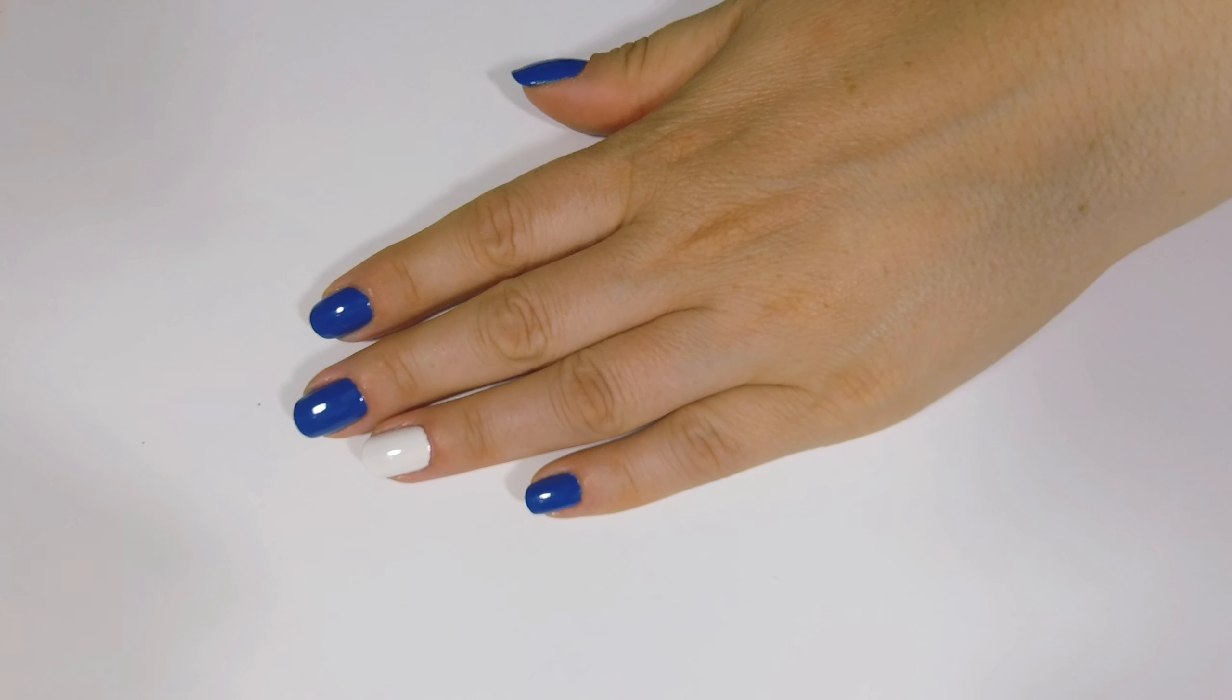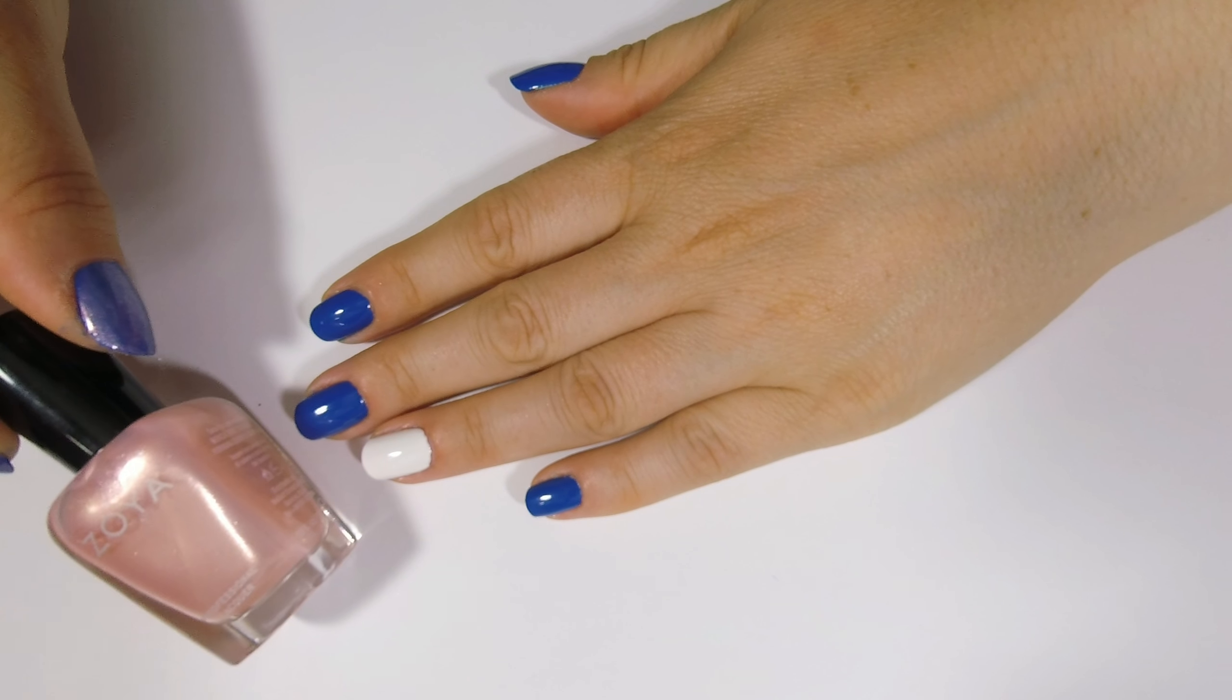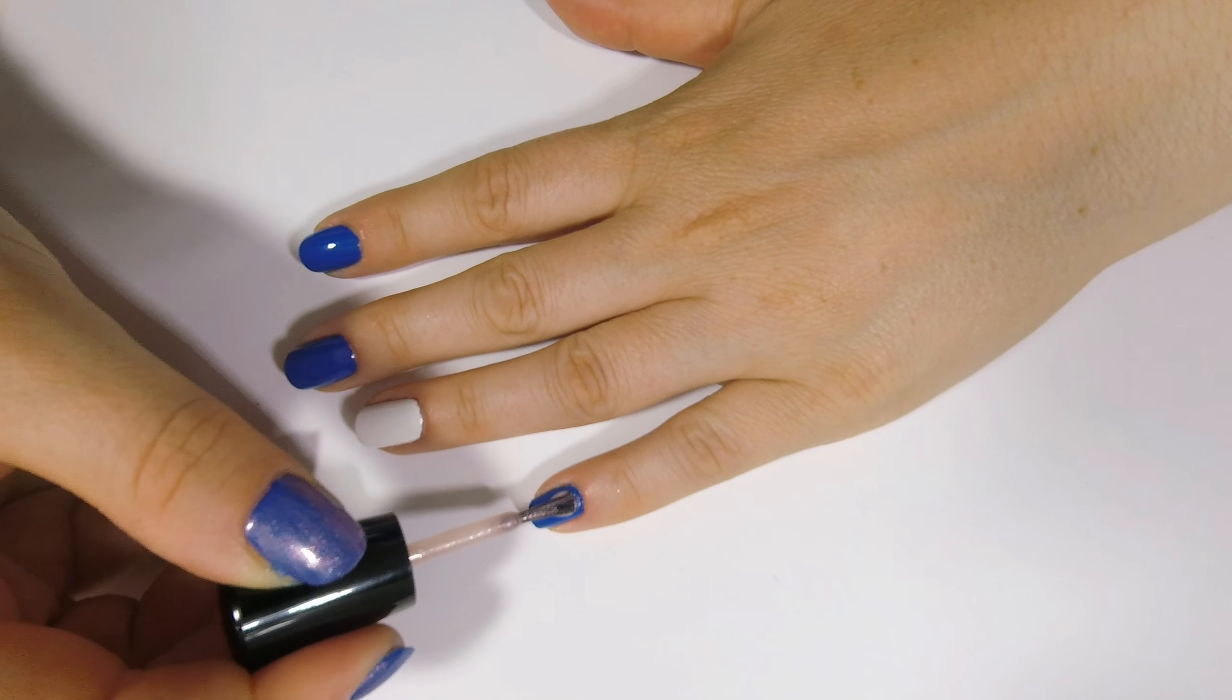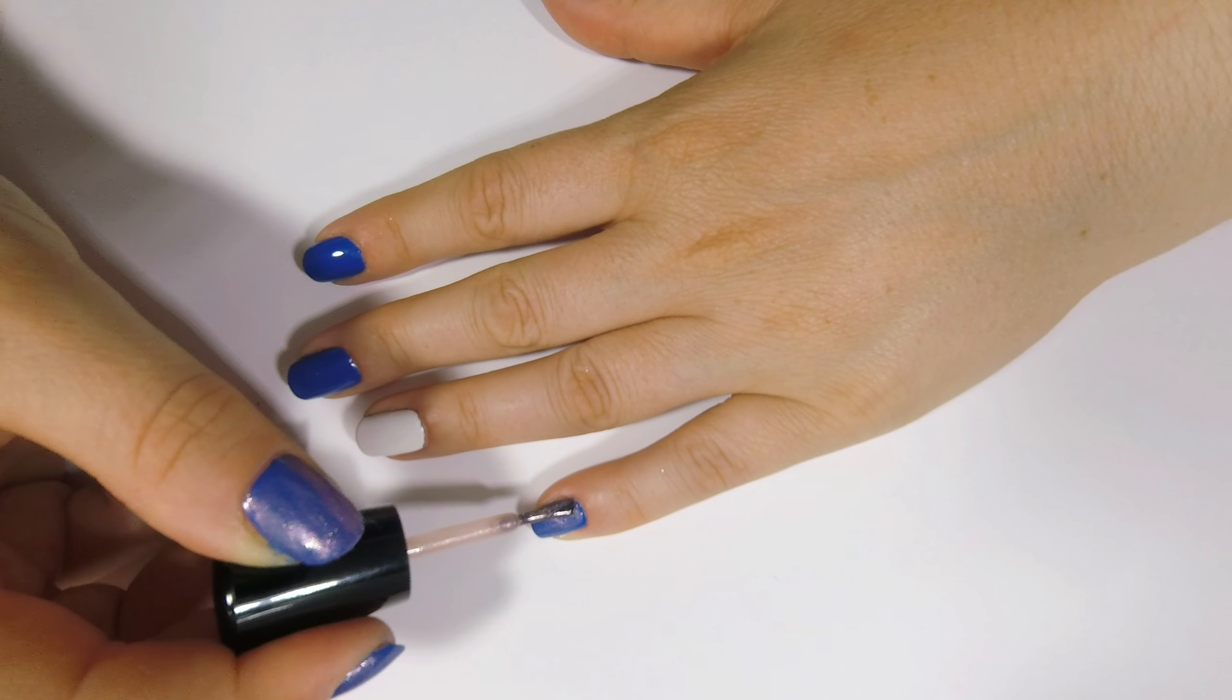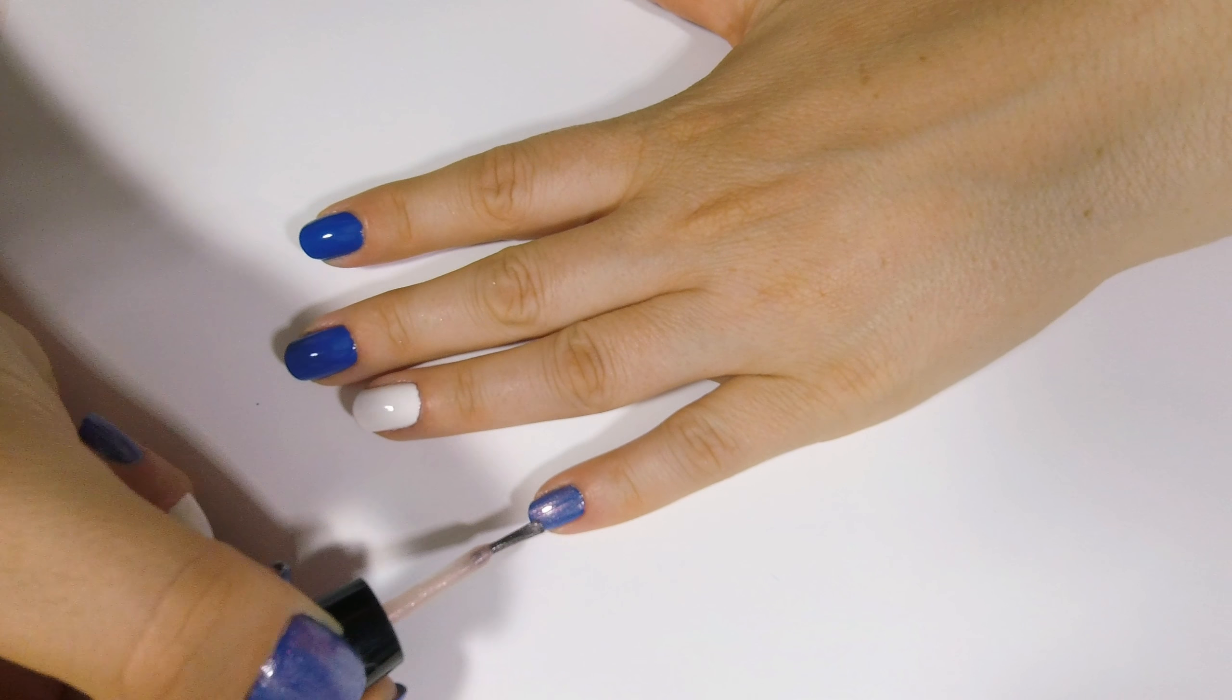Ma ora passiamo alla nail art. Ho deciso di valorizzare questo splendido blu applicando sopra uno smalto Zoya con effetto shimmer dal nome Bebe che ho ricevuto dal blog Nell'arte Unghie, ed in cui vi lascio il link nell'info box dove potete trovare tutto, ma proprio tutto, sui prodotti dedicati alle unghie.